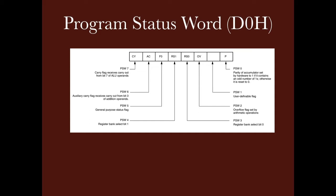The Carry flag is at the D7 bit and is set when there is a carry out. It can also be set or reset directly using the set bit carry and clear carry instructions. The Auxiliary Carry flag is set when a carry occurs from D3 to D4 in addition or subtraction operations, and it is normally used in BCD operations. The Parity flag indicates whether the number of ones in the accumulator is odd or even — if odd, the parity flag is set; if even, it is reset.